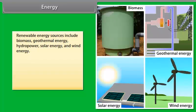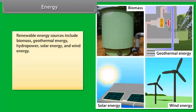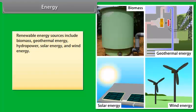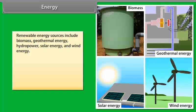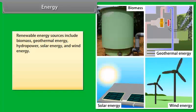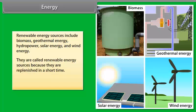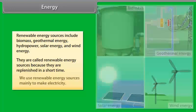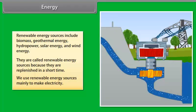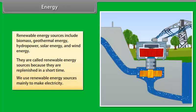Renewable energy sources include biomass, geothermal energy, hydropower, solar energy, and wind energy. They are called renewable energy sources because they are replenished in a short time. We use renewable energy sources mainly to make electricity.